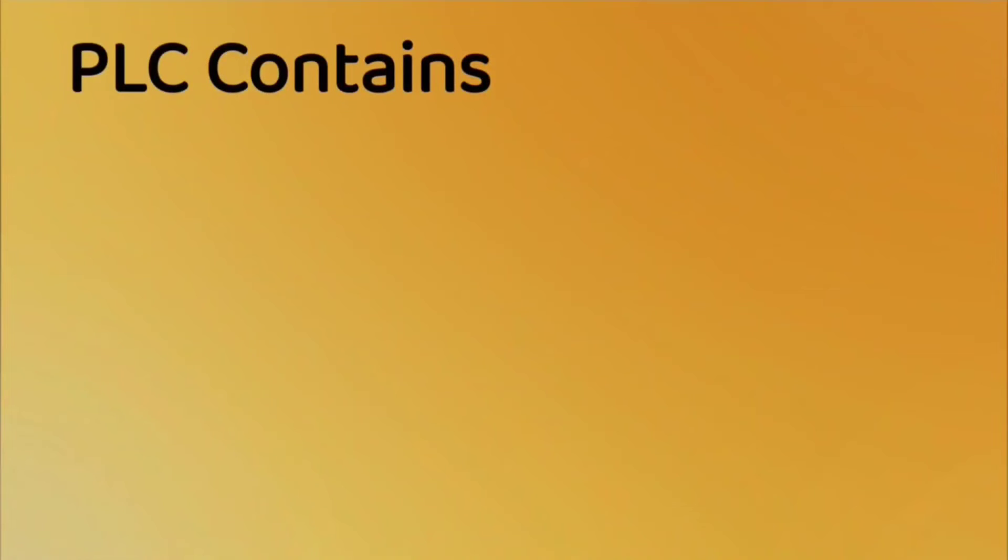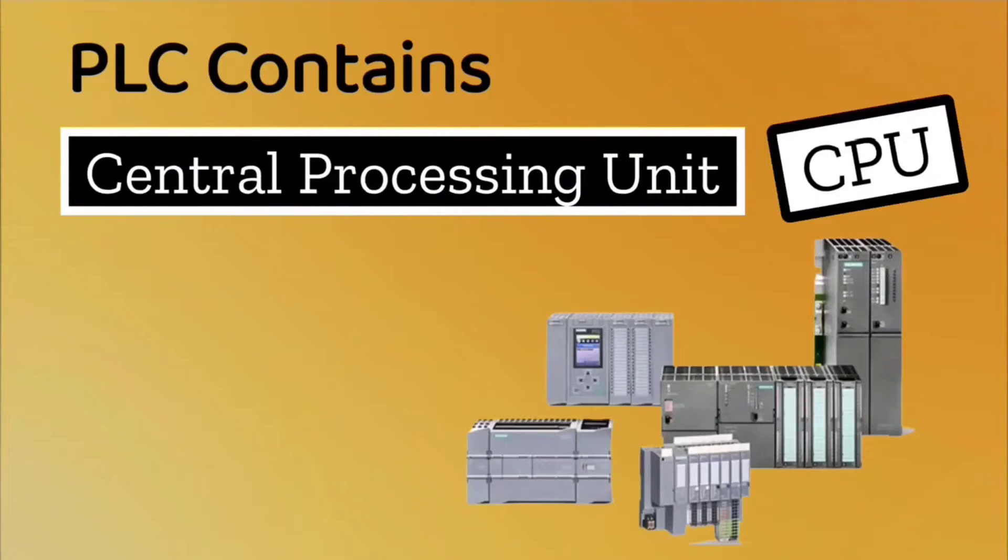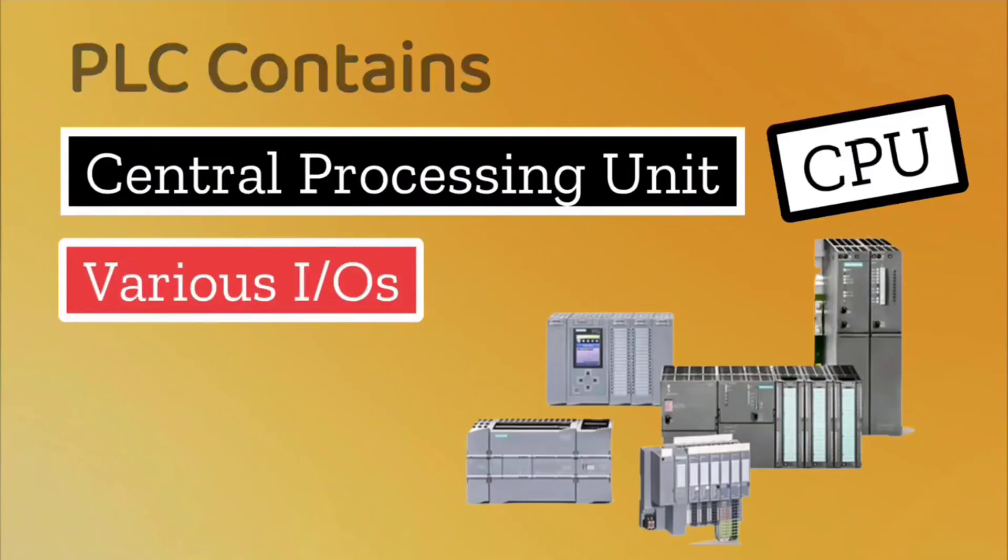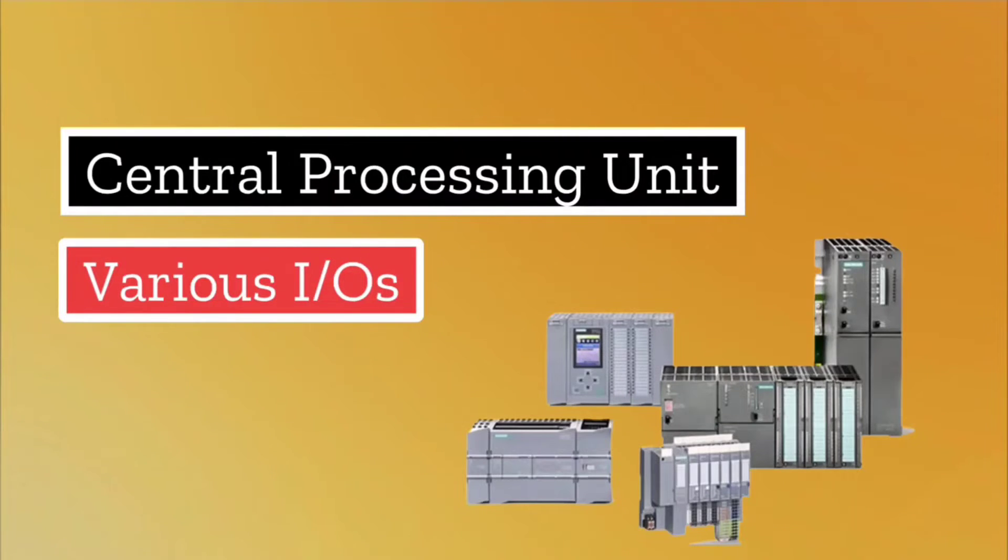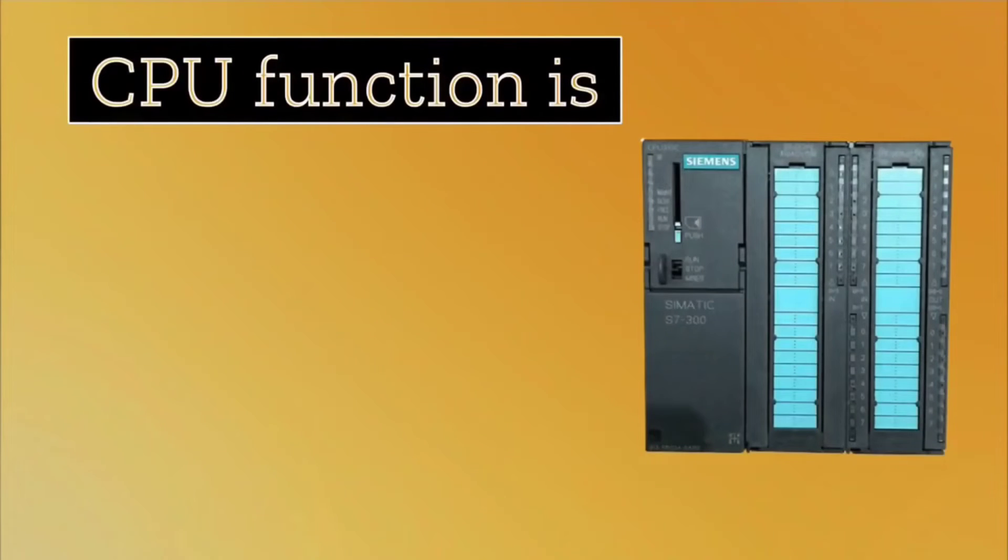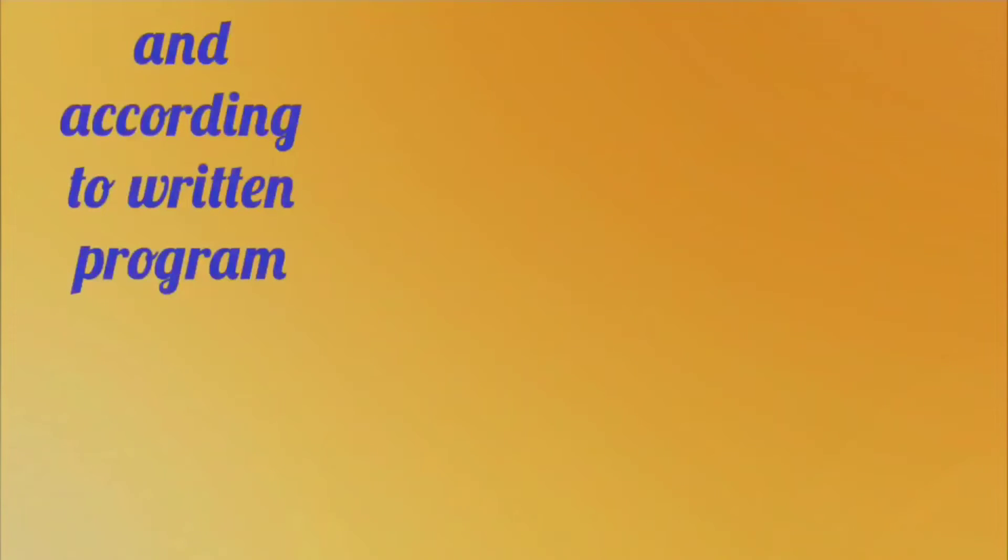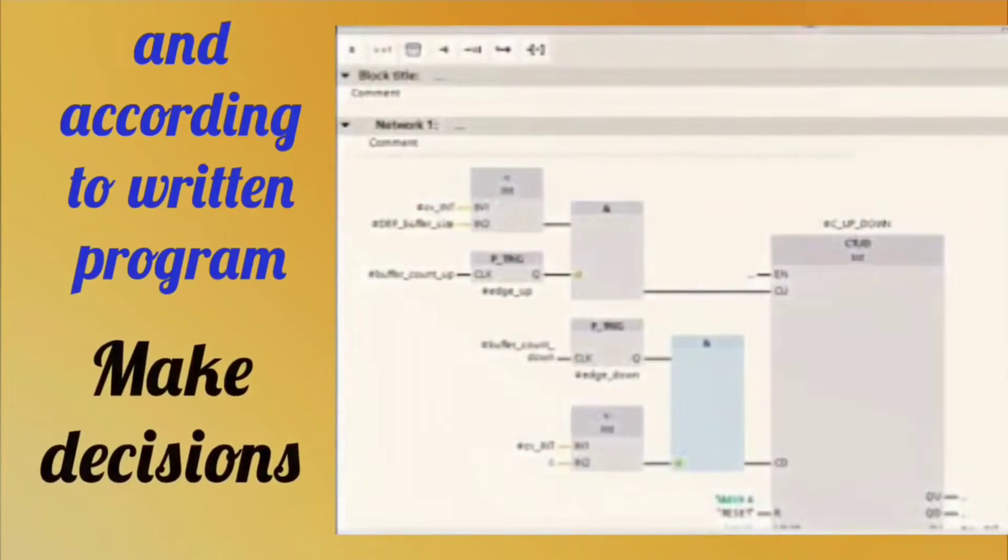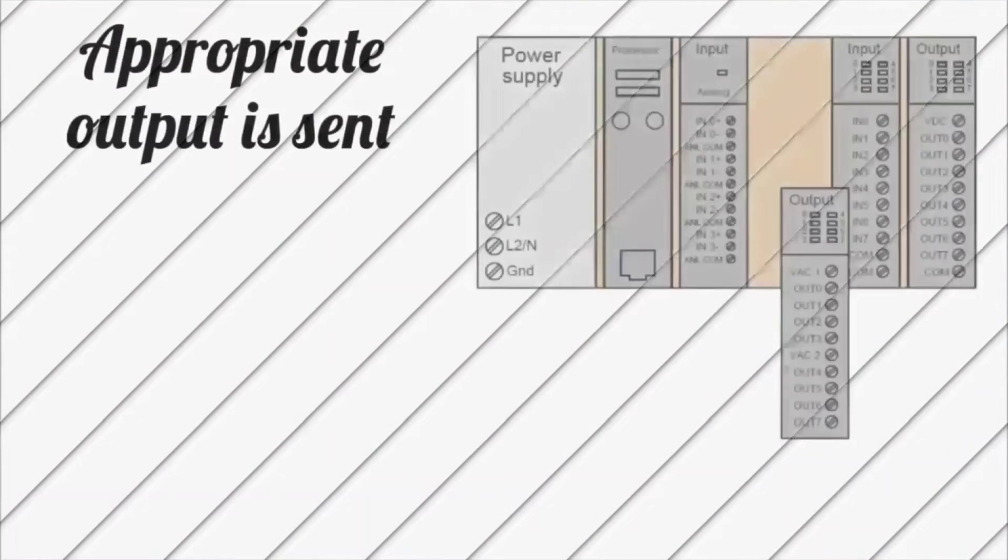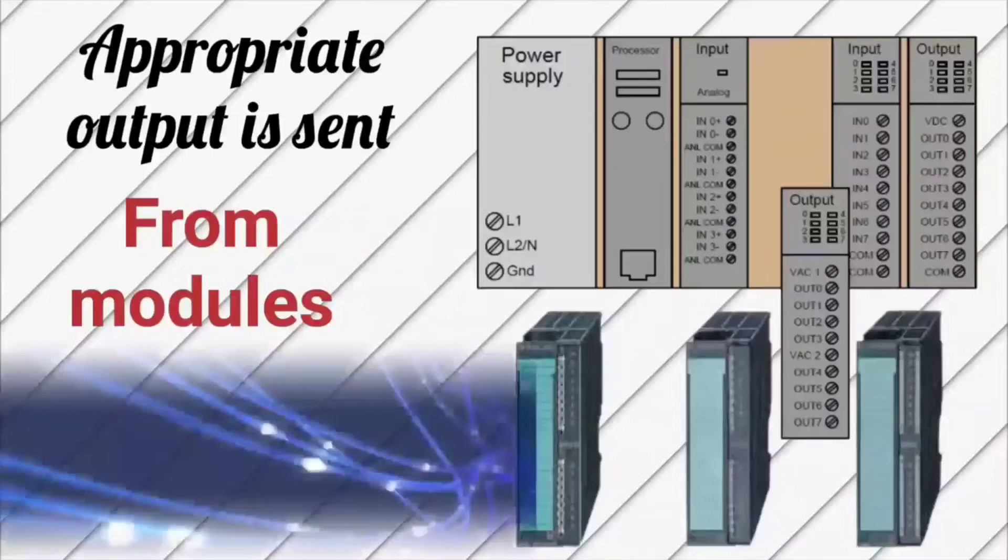In PLCs, there is one central processing unit, meaning CPU. Various input-output which are called IOs, there are modules, and associated software. CPU functions by reading data from IO modules, according to the written program, taking decisions. Appropriate output is then sent to modules in the form of signals.